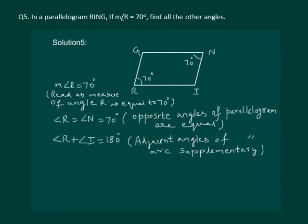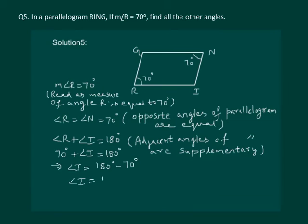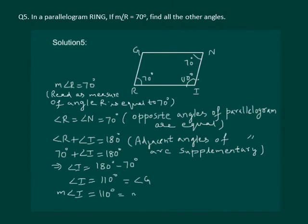So, let us find the value of angle I. We substitute: angle R is 70 degrees plus angle I should be equal to 180 degrees. This implies that angle I is equal to 180 degrees minus 70 degrees, so angle I is equal to 110 degrees. Our angle I is 110 degrees. Then angle G is also 110 degrees as opposite angles of parallelogram are equal. So, measure of angle G is equal to 110 degrees.